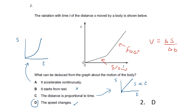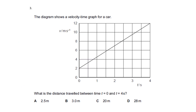It can't be A because if it accelerates continuously you'd expect a smooth curve. It's not B because if it's starting from rest you would expect a horizontal line at the start. And it can't be C because if distance is proportional to time you would expect just a single straight line passing through the origin.